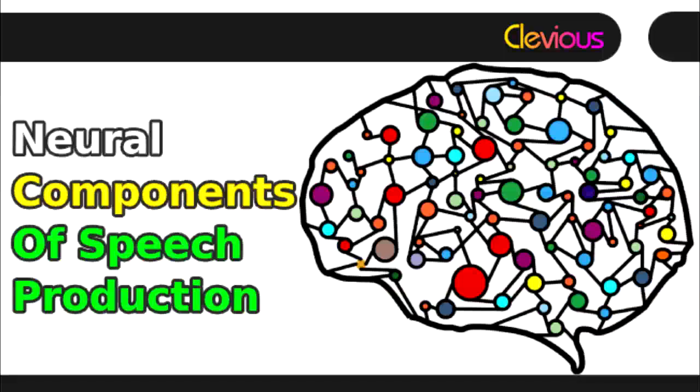These regions include the motor cortex, thalamus, dorsolateral caudate nucleus, and the cerebellum.